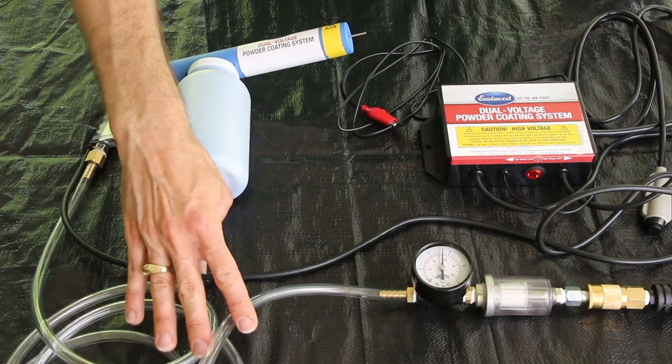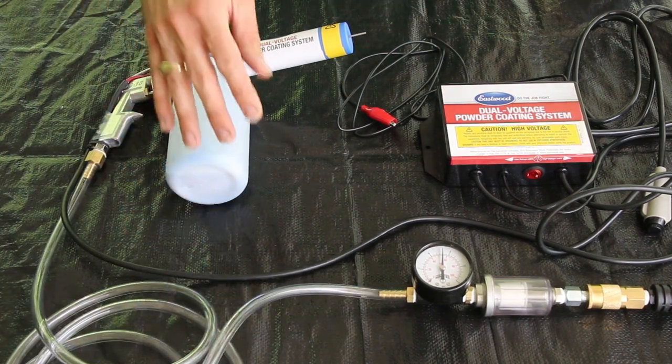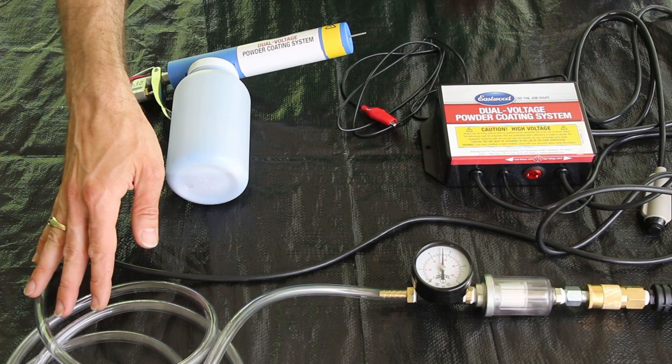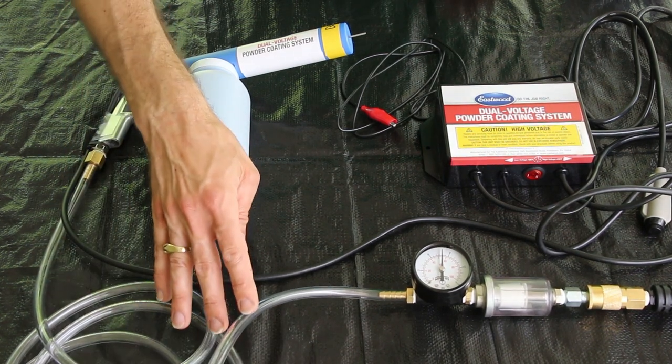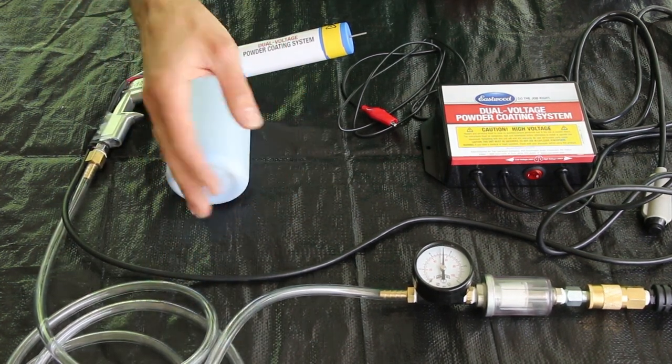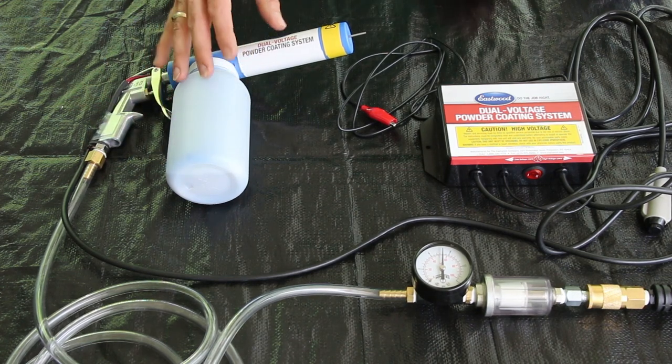It connects to an air supply, and this is one of the tricks: you need a very low pressure air supply, about 8 pounds per square inch or 55 kPa is ideal for this gun.